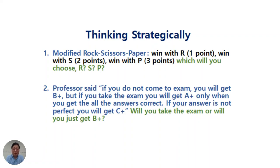But if you come to the exam, I'm going to give you either A+ or C+. And A+ would be given to you only when you get all the answers correct. If you get like 90% answers correct, 10% you miss, then I'm not going to give you B+, I'm going to give you C+. So it's quite a risk for you to go to the exam. You may get A+, but otherwise, you are doomed to get C+.